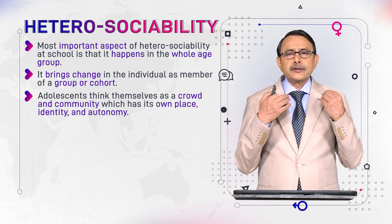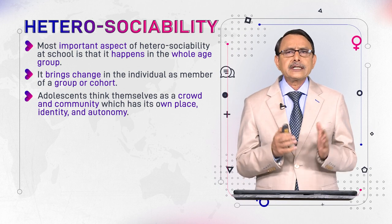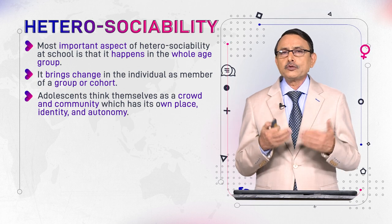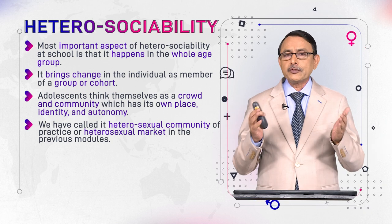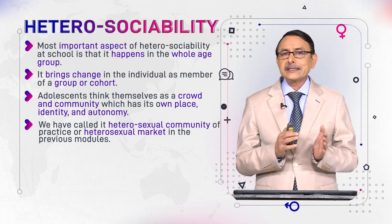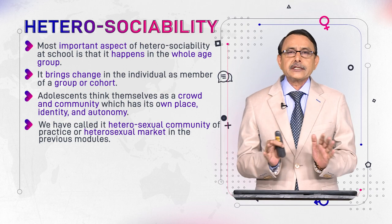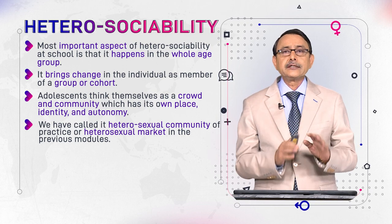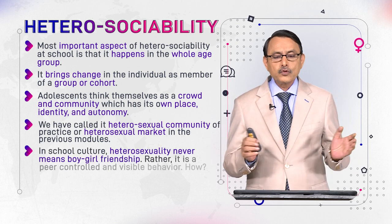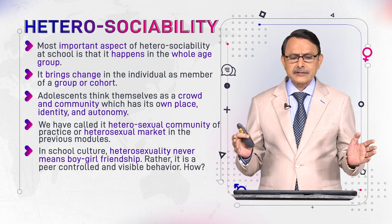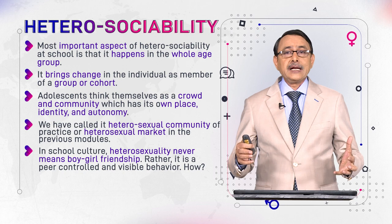They have autonomy from teachers and parents. They feel themselves in an environment where they can make their own decisions and take their own choices. We have called this the heterosexual community of practice or heterosexual market in previous modules. In school culture, heterosexuality never means just a boy-girl relationship; rather it is a peer-controlled and visible behaviour.